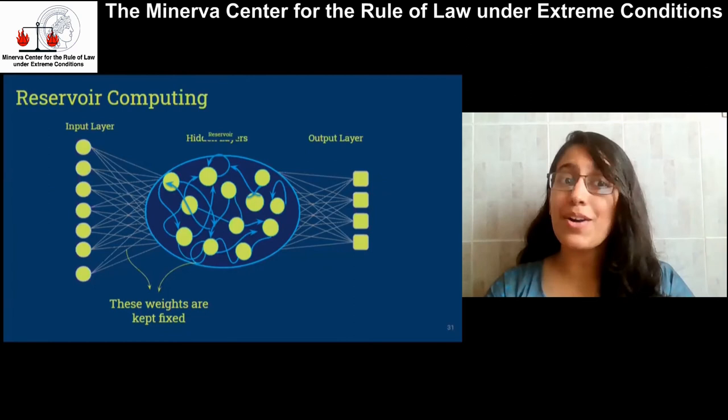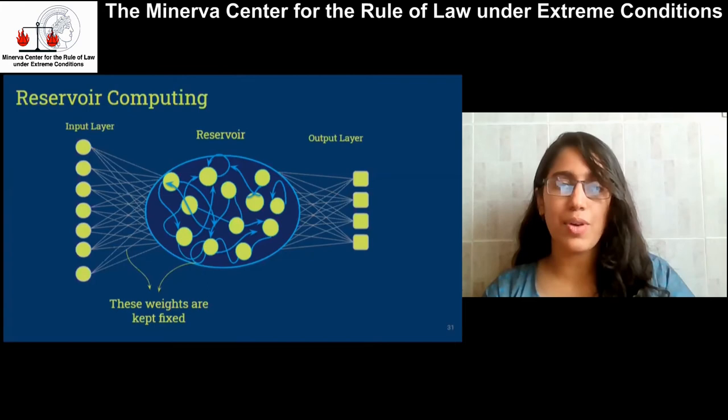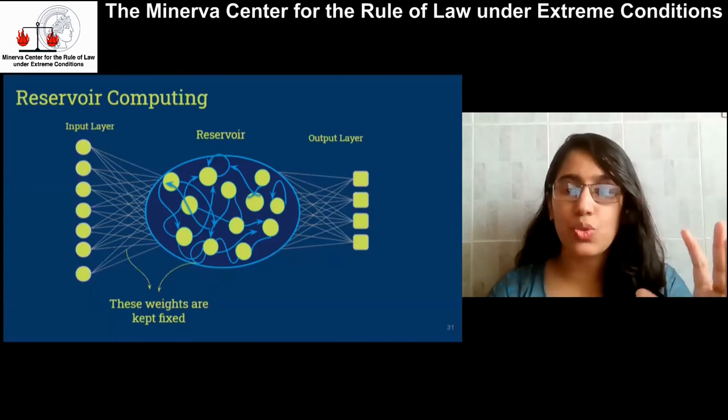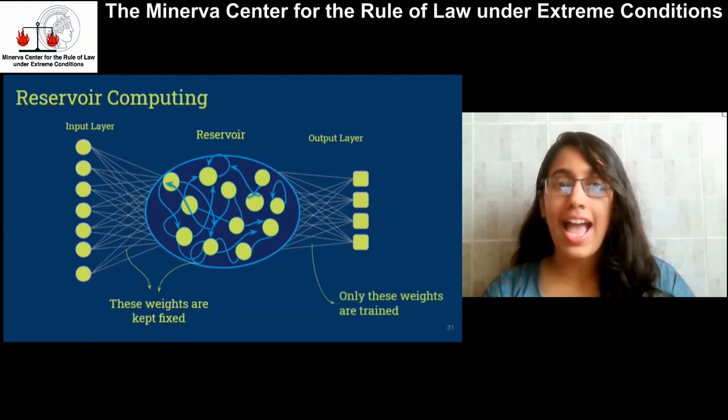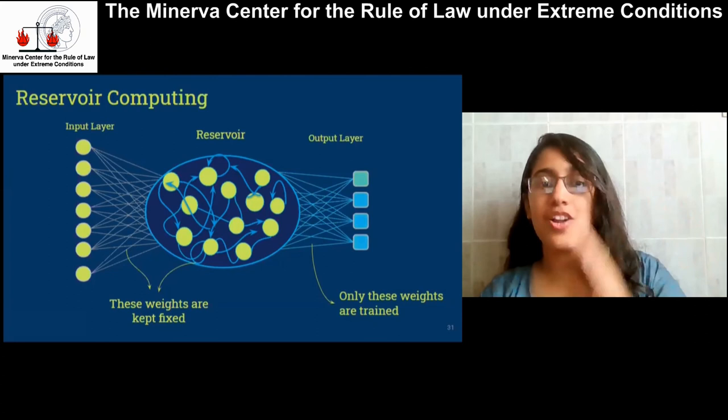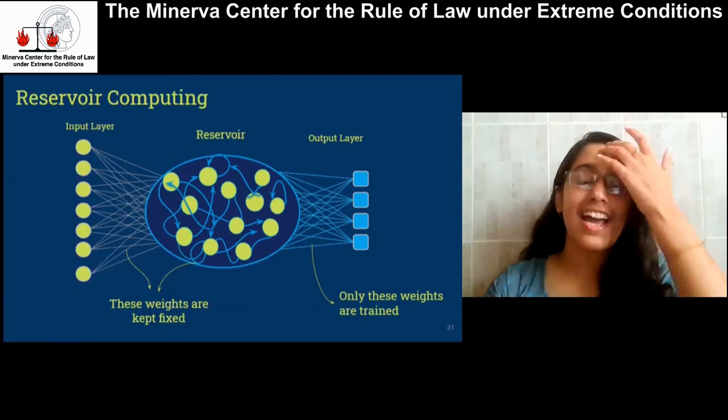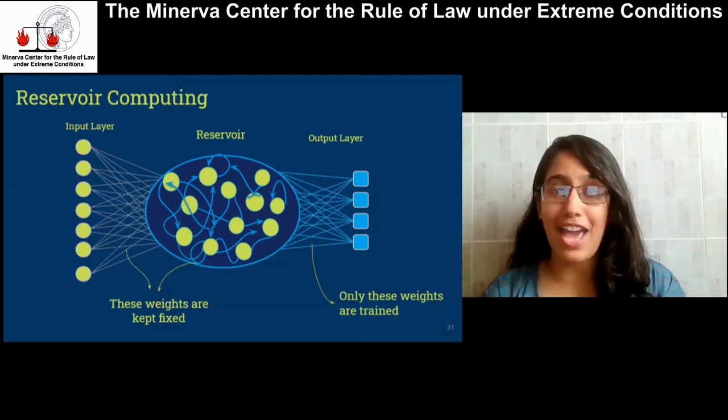Instead of calling it the hidden layers, we now call it a reservoir. What is cool about reservoir computing is that in normal neural networks, you have to compute the weights in the input layer and the hidden layers for each different task. But here, you don't have to find them — you only have to change the weights in the output layer for different tasks. This is similar to putting different filters for different effects, and this saves a huge amount of computational time and effort.